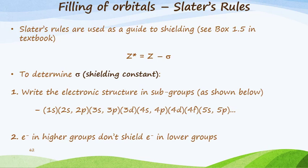These rules are used as a guide to help you calculate the shielding constant. I refer you to box 1.5 in the textbook where we can calculate the effective nuclear charge as Z* = Z - σ, the atomic number minus the shielding constant. To determine the shielding constant there's a set of rules, Slater's rules, which you use to figure out the effective nuclear charge.